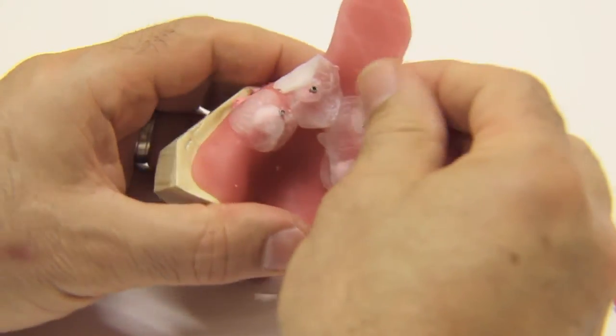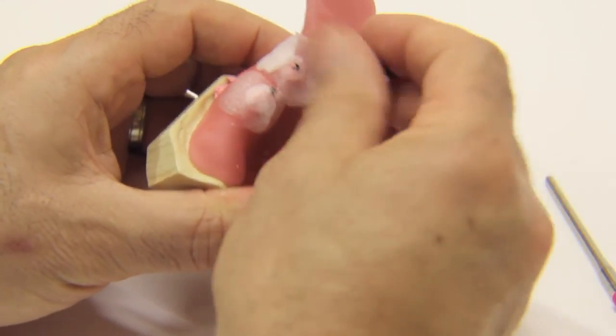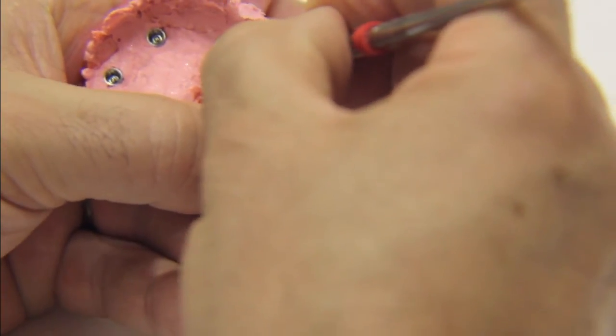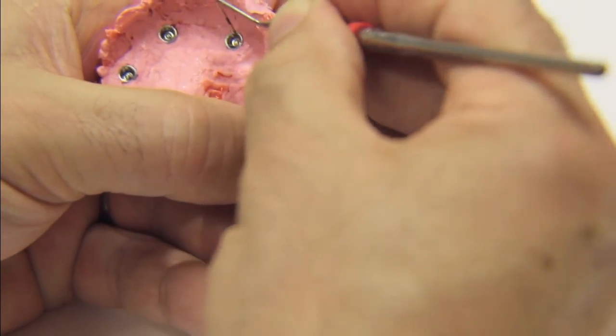Once the impression material is set, use your driver to loosen the screws and remove the impression from the patient's mouth. Carefully inspect that the impression copings are securely fixed in the impression.